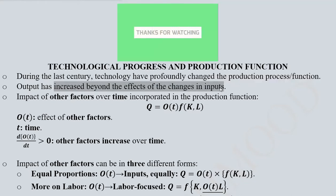We know that output has increased beyond the effects of the changes in inputs. When we talk about inputs we usually talk about capital and labour, but in addition to the effect of capital and labour, there has been quite a bit of effect attributed to technological progress. So how can we incorporate this in our production function? Let us see.